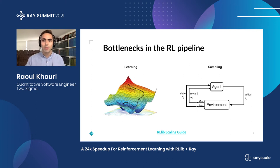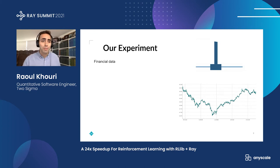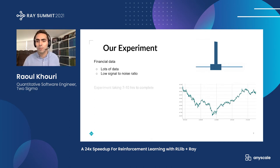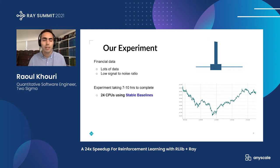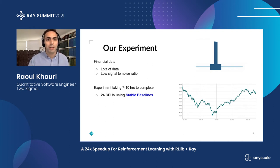So let's talk about our experiment. We deal with financial data — not a classic physics emulator or something you might see in a normal RL package. There's a lot of financial data, and there's low signal-to-noise ratio, which often really slows down experiments. The experiment we're focusing on today was taking about 7 to 10 hours to complete — basically overnight or an entire workday. And this was already using 24 CPUs on stable baselines, where learning was only taking about 10% of the time, with the other 90% basically spent interacting with the environment or generating samples.